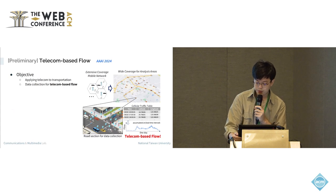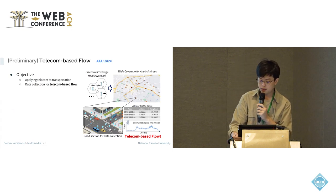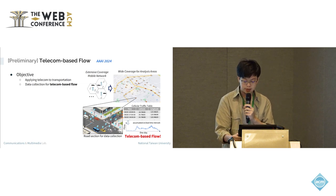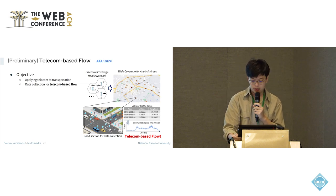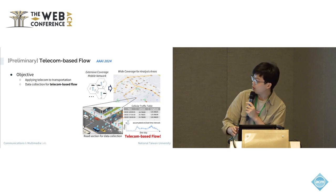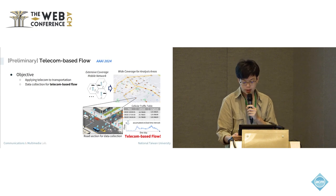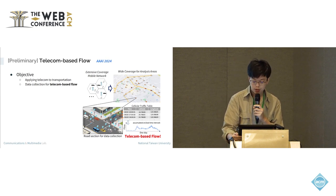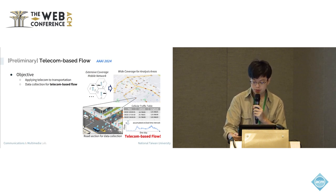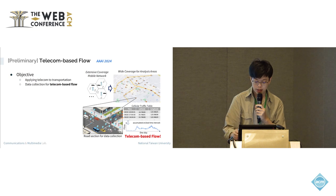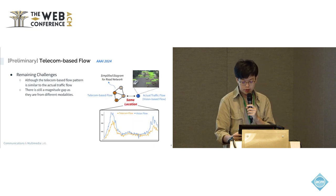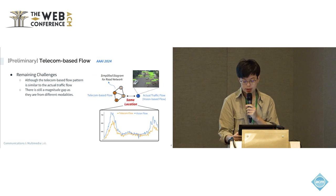In our previous work, we utilized the extensive coverage of the mobile network to collect user data on selected road sections. When a user connects to the mobile network, they generate a record — as shown in the table — containing the timestamp, user ID, and GPS location information. We can accumulate these records at a fixed time interval, which we refer to as the telecom-based flow. This telecom-based flow can serve as an alternative for traffic flow in areas without sensors or cameras.